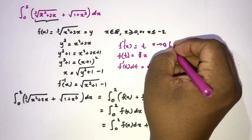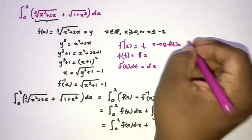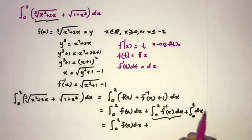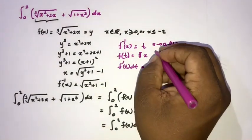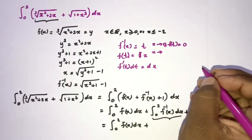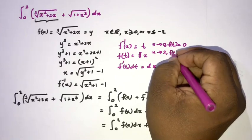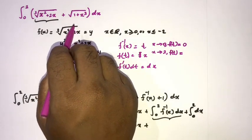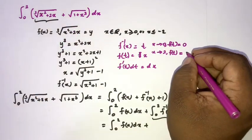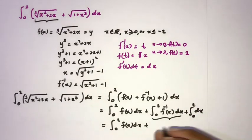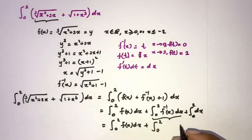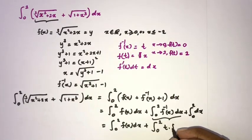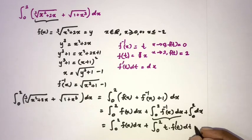We also need to change the boundaries. When x approaches 0, f(t) approaches 0, so t approaches 0 as well. When x approaches the upper limit 2, we know f(t) equals 2, so t also approaches 2. Therefore the limits remain 0 to 2. Under this substitution, f⁻¹(x) becomes t and dx becomes f′(t) dt.